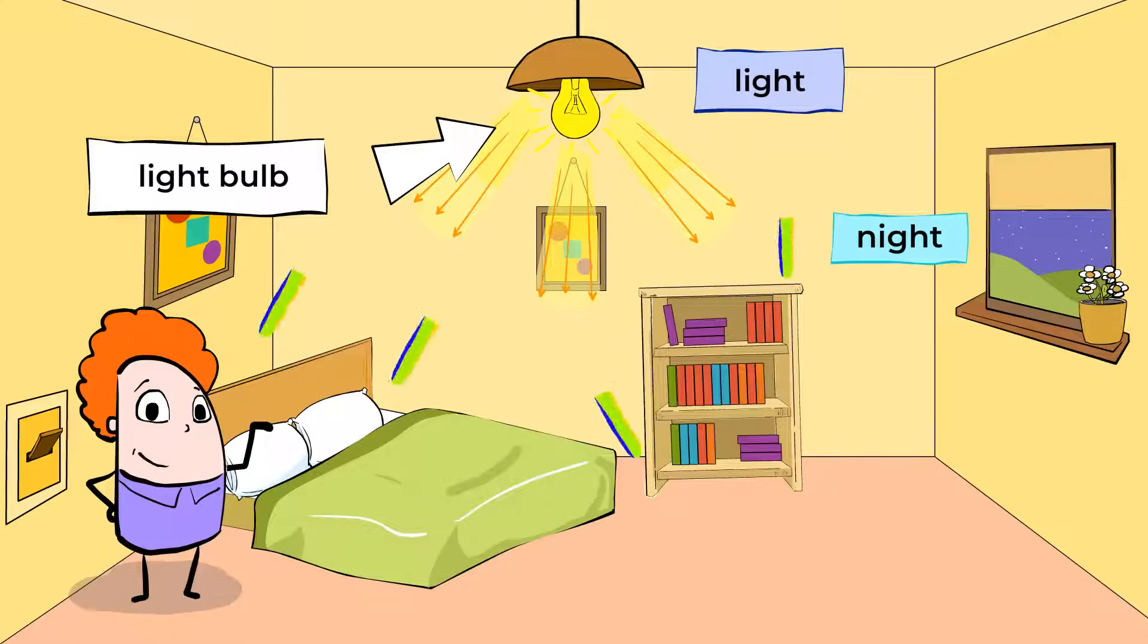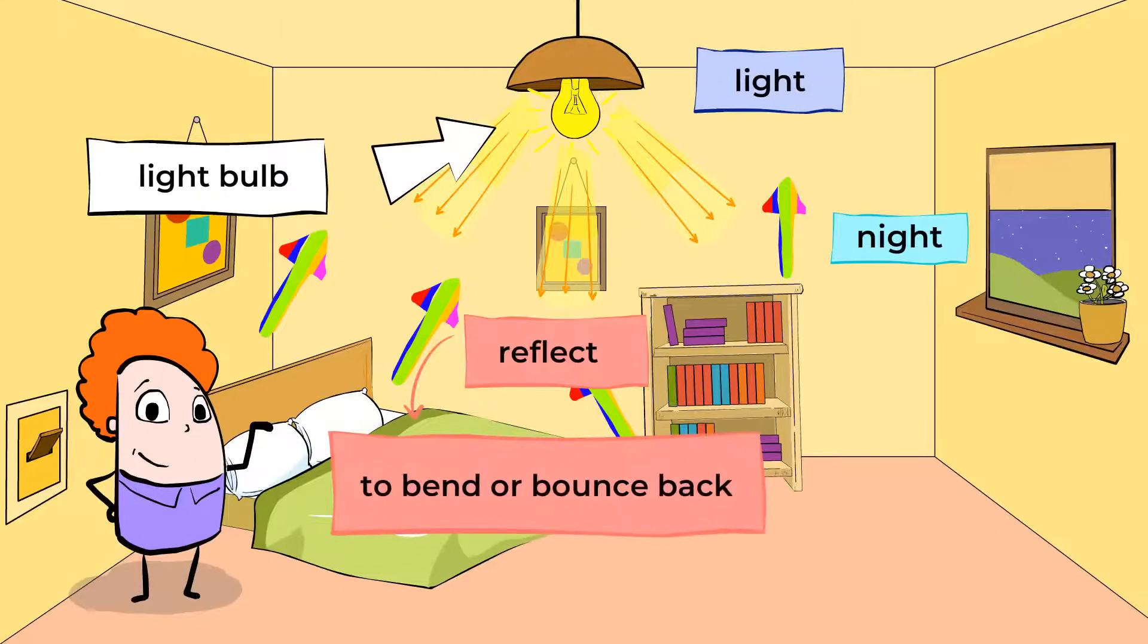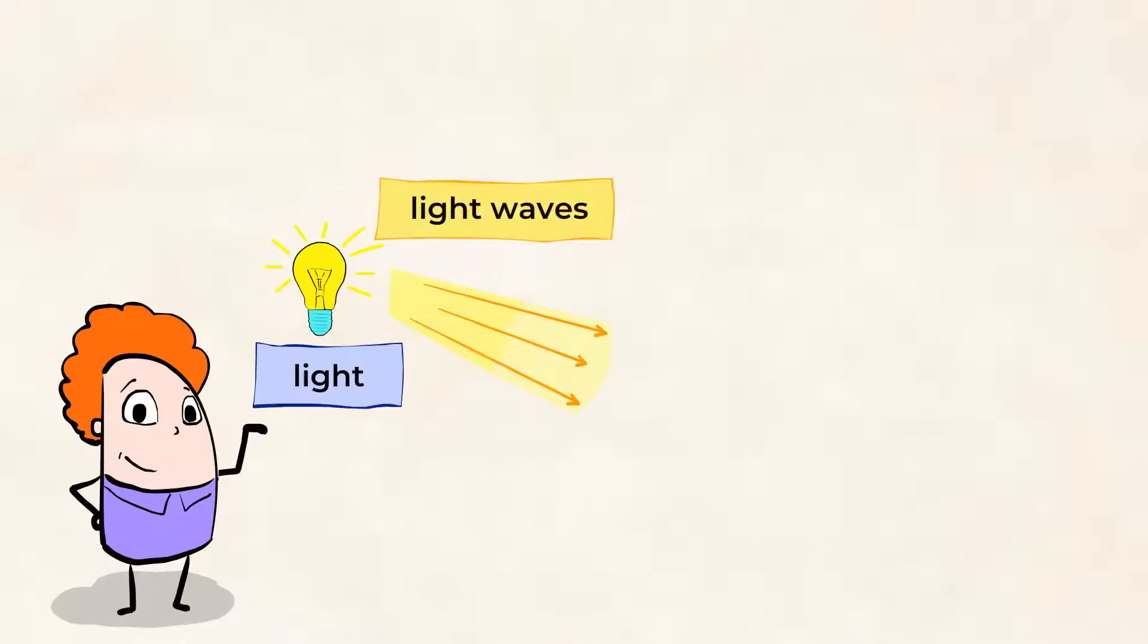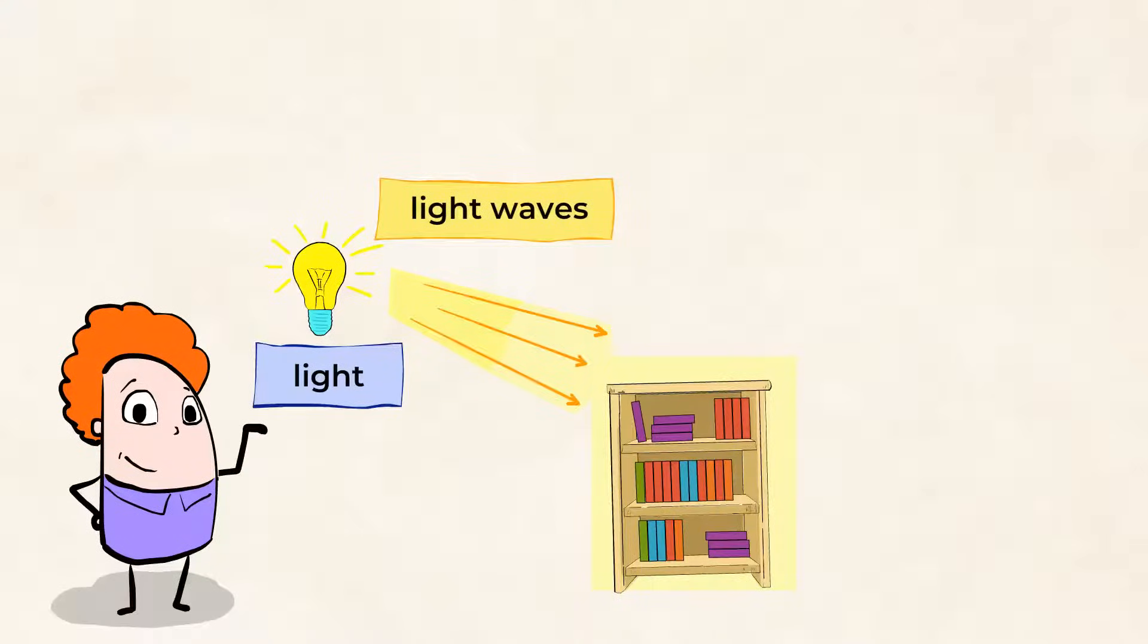The light produced by the light bulb is reflected off the many objects in the room. To reflect means to bend or bounce back. So the light bulb produces light waves, and those bounce off of everything in the room and into our eye.